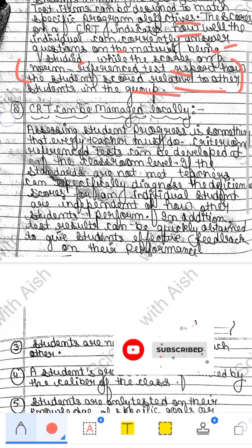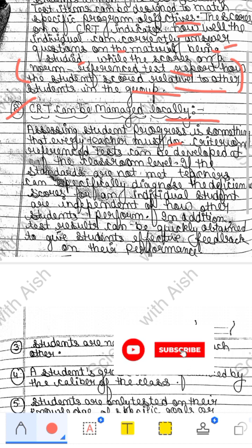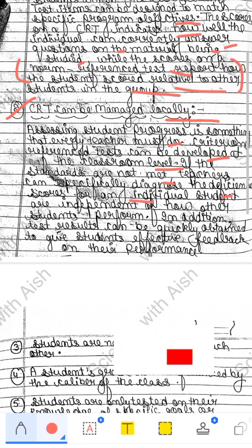The second advantage is that CRT can be managed locally — we don't need to go to a very high level. It can be tested in a proper classroom setting. Every teacher must assess each child's ability, and Criterion Reference Test can be developed at the classroom level. If standards are not met, teachers can specially diagnose a deficiency in an individual student.